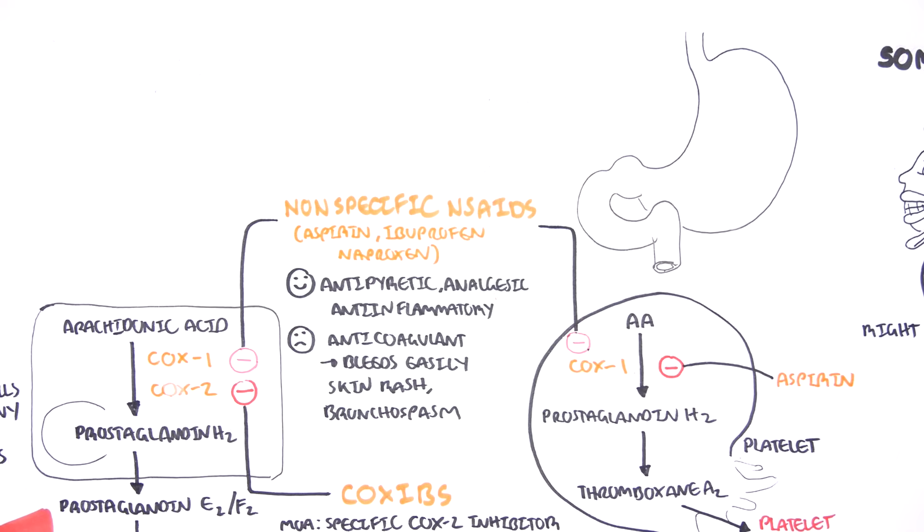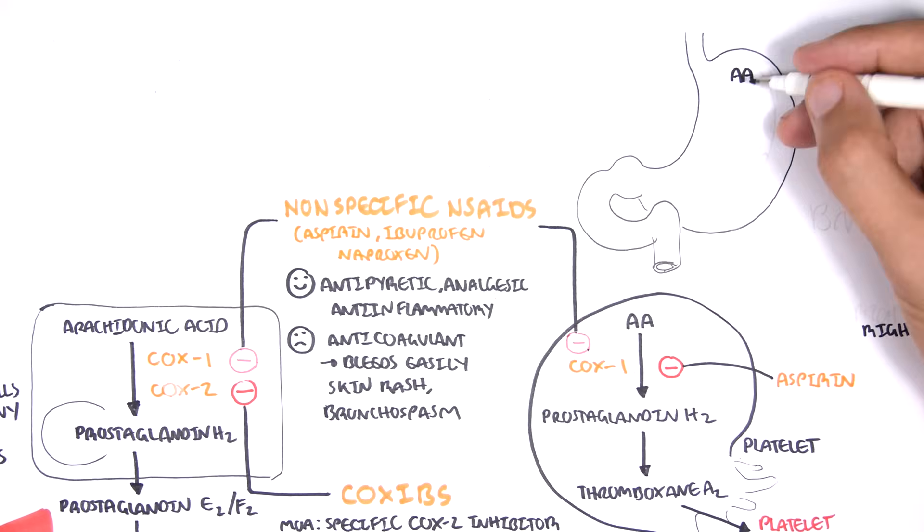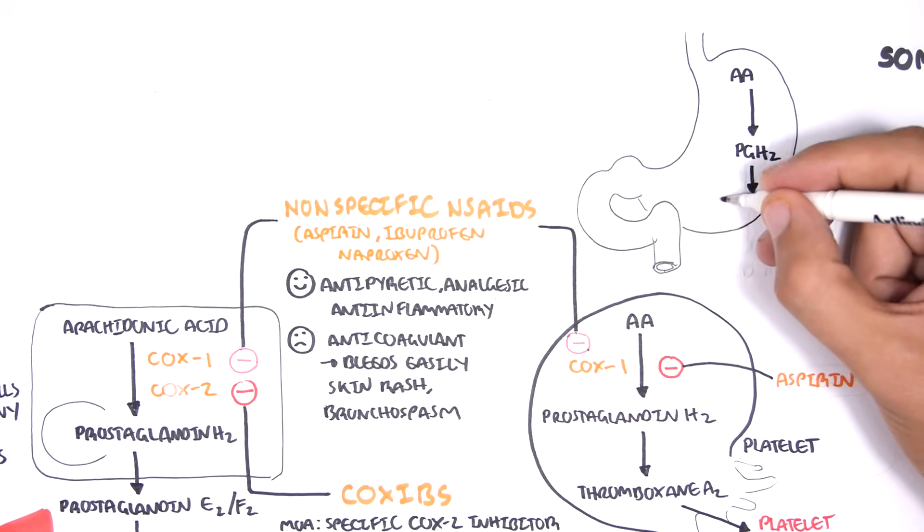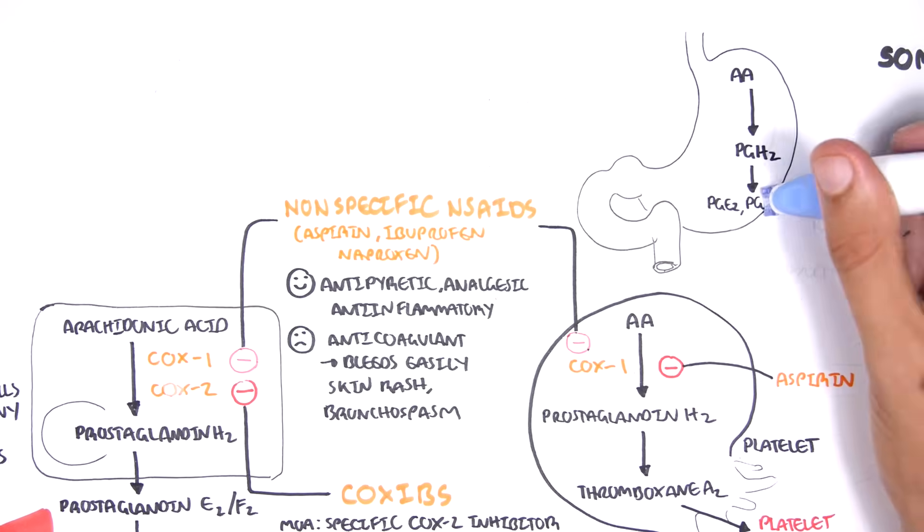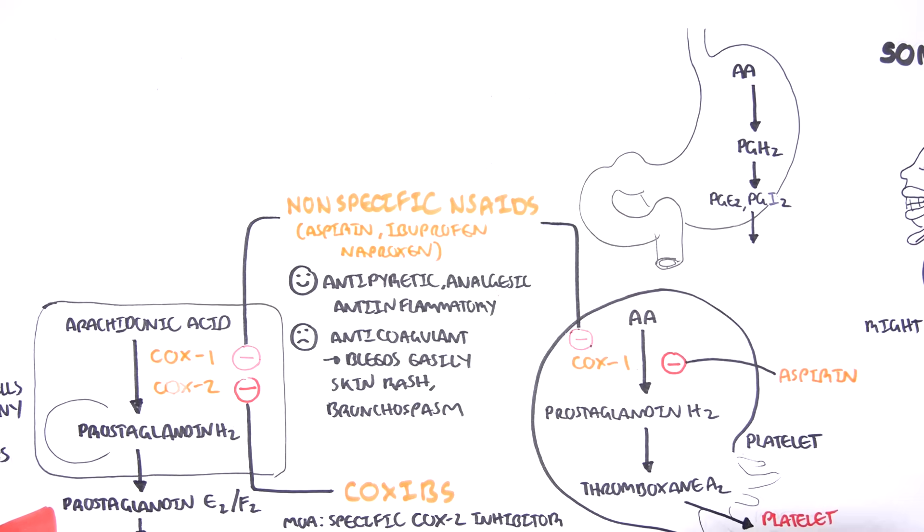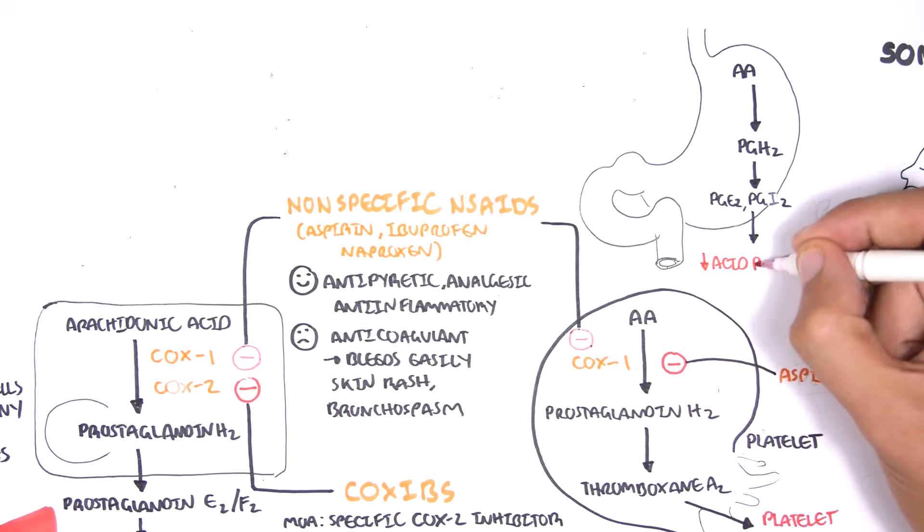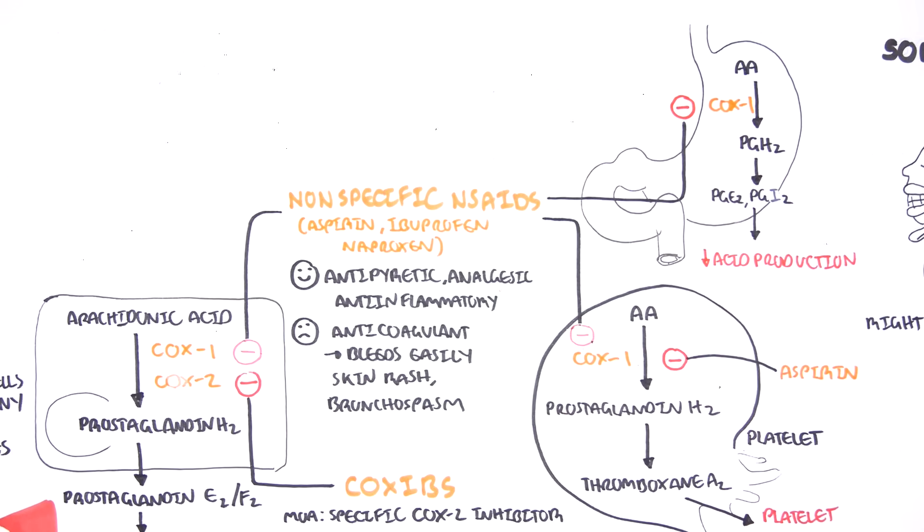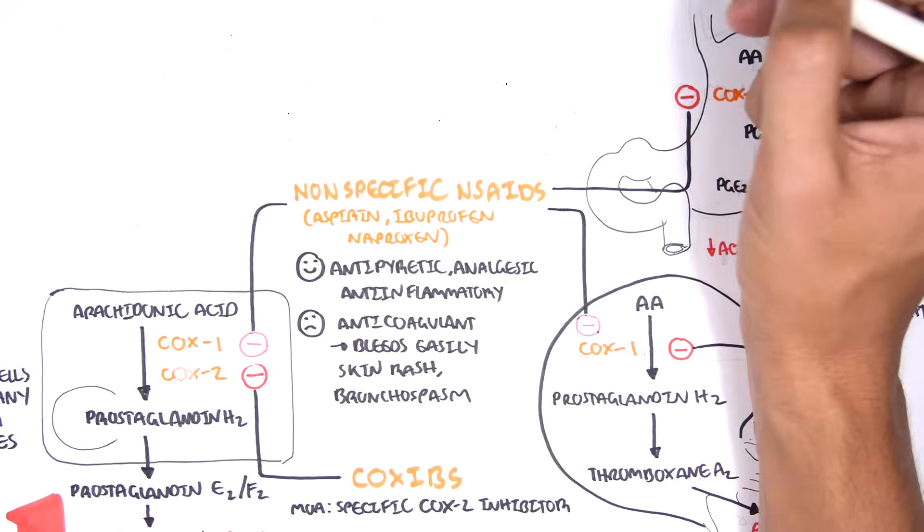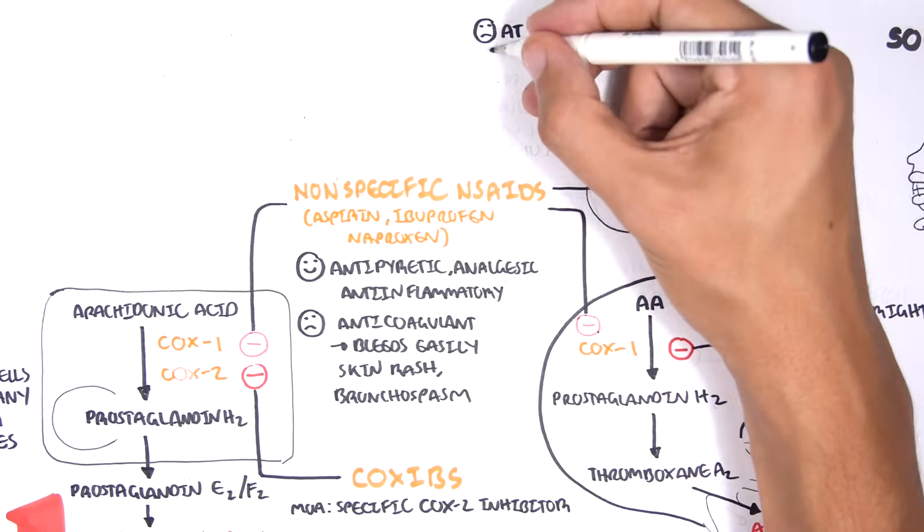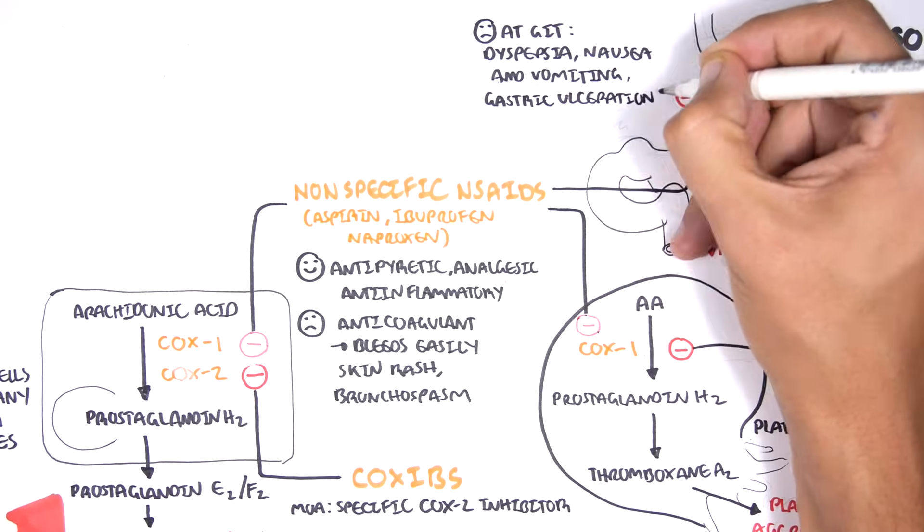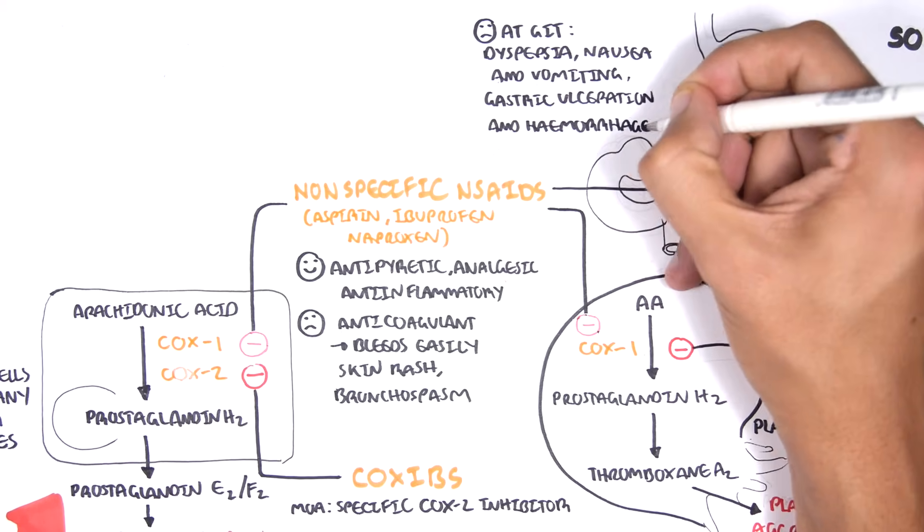In the stomach, for example, COX1 converts our arachidonic acid to prostaglandin H2, which then forms prostaglandin E2 and prostaglandin I2. These prostaglandins actually help decrease acid production in the stomach. And so by inhibiting COX1 here, you are essentially allowing more acid to be produced in the stomach. Side effects include dyspepsia, nausea and vomiting, gastric ulcers, and hemorrhage are potential long-term high-dose consequences.